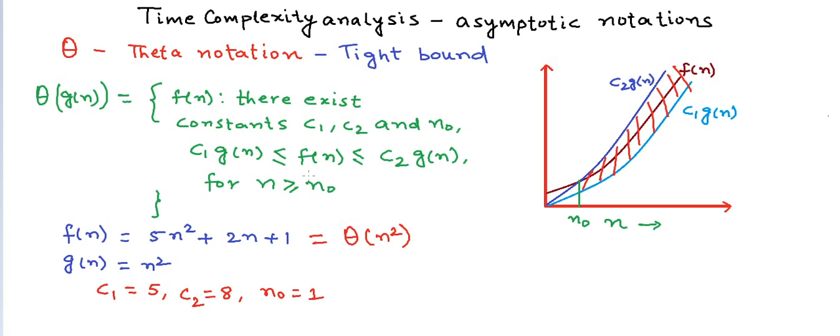In time complexity analysis, we should always try to find the tight bound expression — the Theta notation — of the time taken, because that gives us the best idea about the time taken. But in many cases we also use Big O notation, which gives us an idea about the runtime of the algorithm in the worst case.